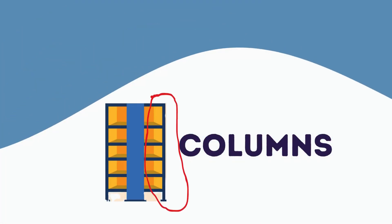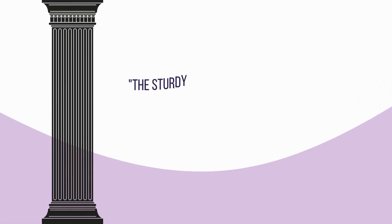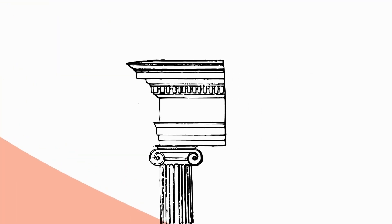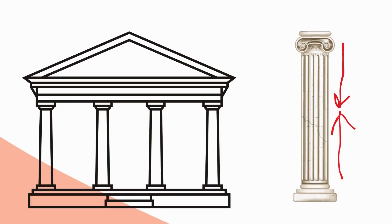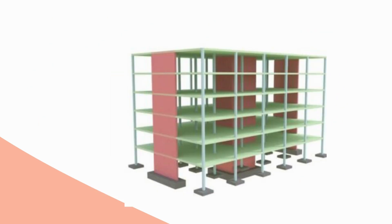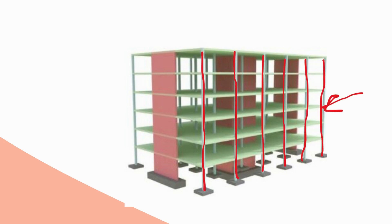Now let's shift our focus to columns. Imagine columns as the sturdy pillars that support the entire weight of a building. Columns are vertical load-bearing elements, often made of steel or concrete, and they carry the vertical load from the superstructure down to the foundation. Unlike shear walls, columns primarily resist compression forces, which are caused by the weight of the structure itself and any additional loads it may carry. They provide the necessary strength and stability for the vertical components of a building.